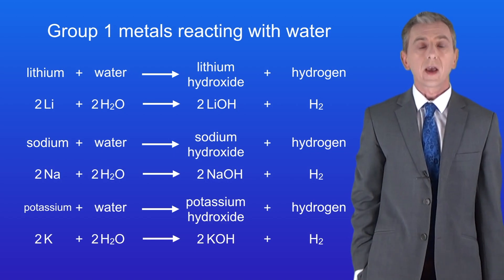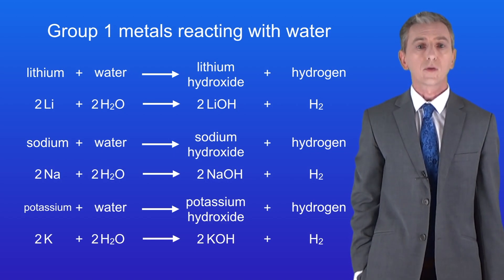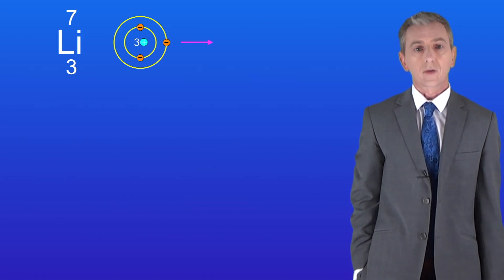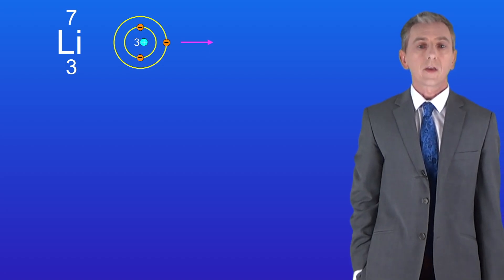So as we've already seen, the elements get more reactive as we move down group 1. Let's see why. Remember that group 1 metals lose their outer electron when they react. We can see that with lithium here.